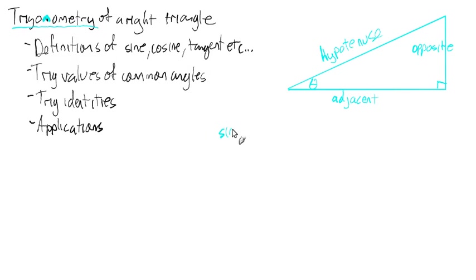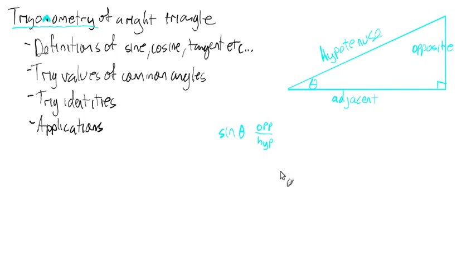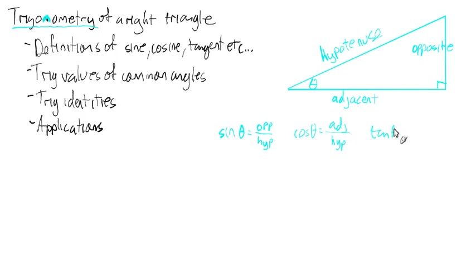We have this thing called the sine, spelled S-I-N-E, shortened to sin(θ). The sine of angle theta is the ratio of its opposite side to the hypotenuse. The cosine is the adjacent over the hypotenuse. And the tangent is the opposite over the adjacent.